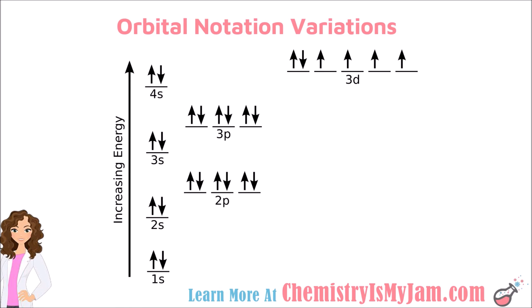The other thing you sometimes see is that instead of being laid out straight across, sometimes the orbitals are arranged on an energy graph. You can see that the 1s has the lowest energy level, then the 2s, then the 2p, then the 3s, the 3p, the 4s, and the 3d. So in order to follow the Pauli Exclusion Principle, you would start with the lowest energy level at the bottom of the graph and fill these sublevels as you go up.